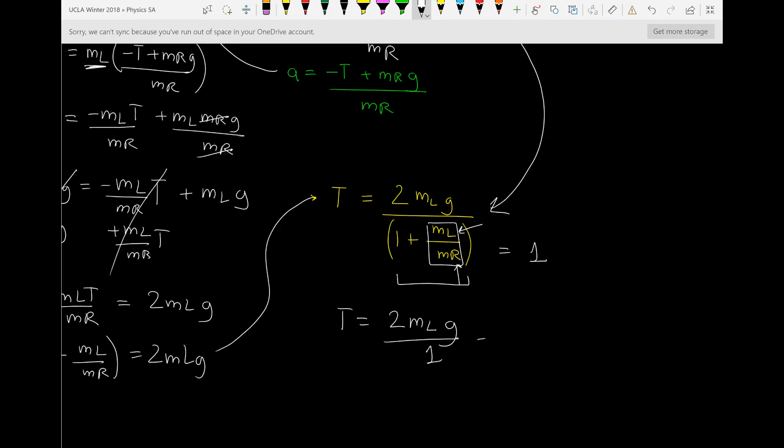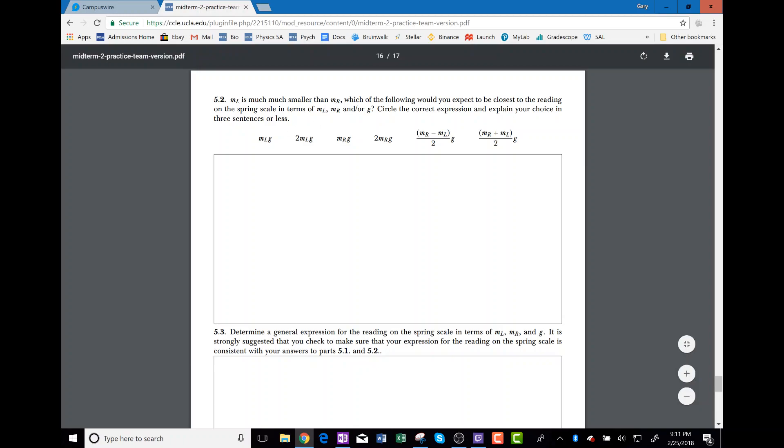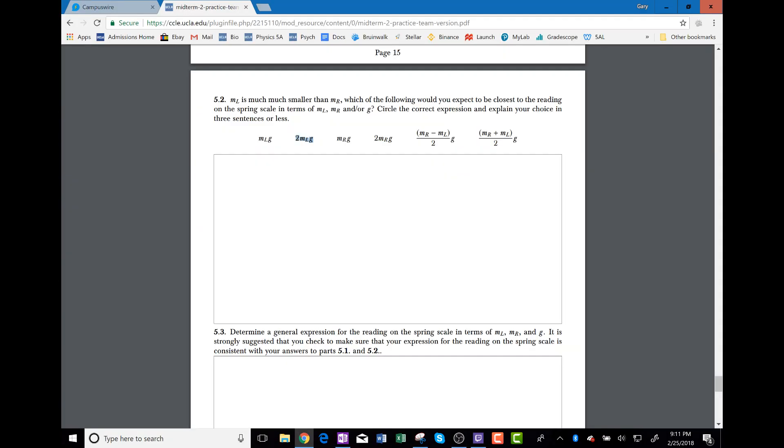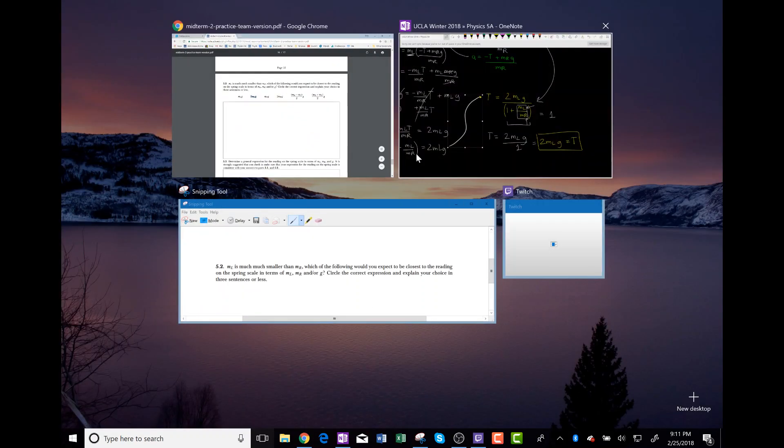And therefore, our final equation looks something like 2 MLG over one, which is the same thing as just saying two MLG equals tension. So this should look familiar because if you look at the problem 5.2, it's saying which of these equations explains the choice. Well, we have it right there, two MLG is exactly what we got. So the answer should be two MLG. And also for 5.3, we also answer the same question.